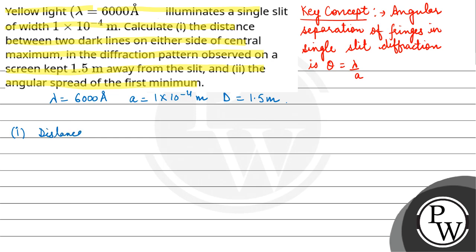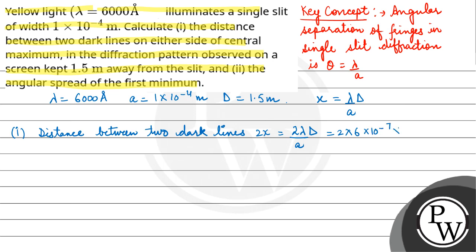So first we have to find the distance between the two dark lines. The distance from the central maxima to one dark line is λd/a, so the distance between two dark lines will be twice that: 2λd/a = 2 × 6×10⁻⁷ × 1.5 / 1×10⁻⁴ = 1.8×10⁻² meter.